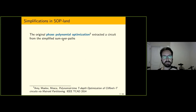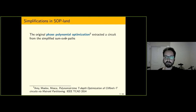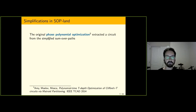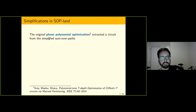If you're familiar with phase polynomial optimizations, the original phase polynomial optimization published in a 2014 paper was actually extracting a circuit from the simplified sum over paths form of a quantum circuit. It was computing sum over paths, simplifying it in a very crude way, and then extracting a circuit back out again, maintaining enough of the original structure of the sum over paths. This is kind of like a crude version of the same things done in ZX calculus with maintaining G-flow, maintaining the circuit-like structure as you're rewriting and simplifying.